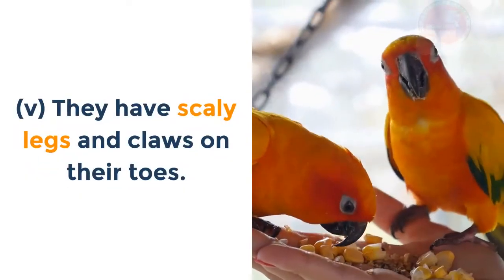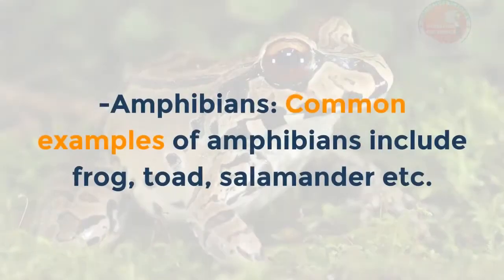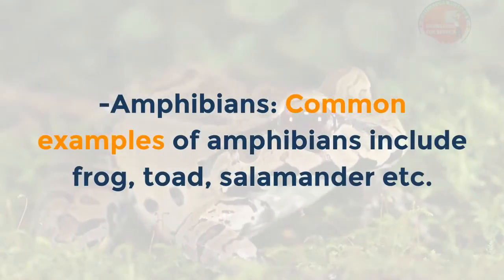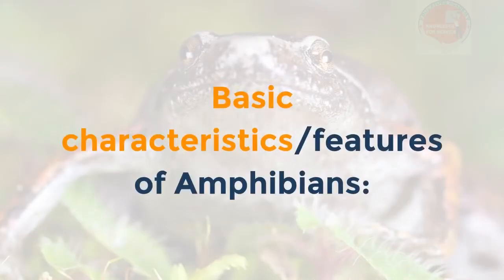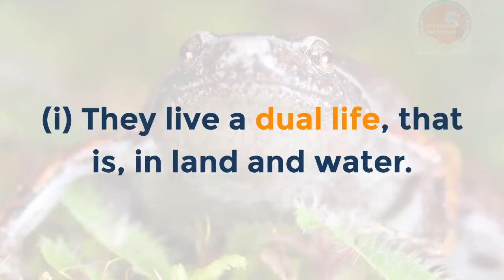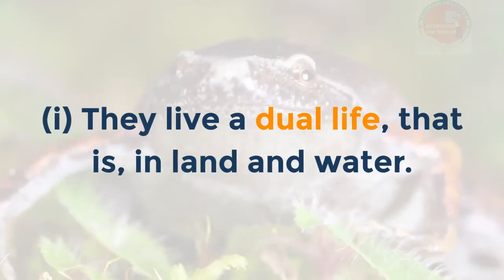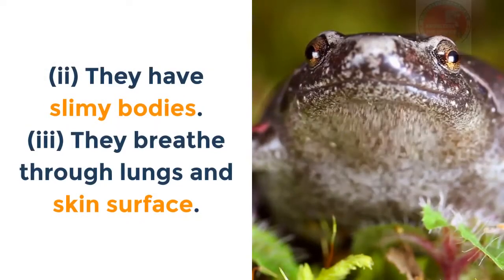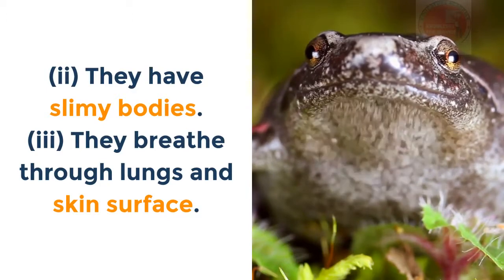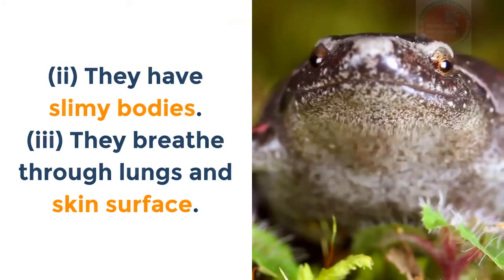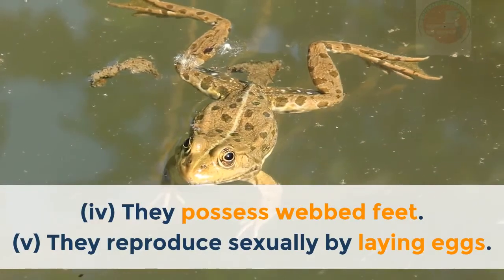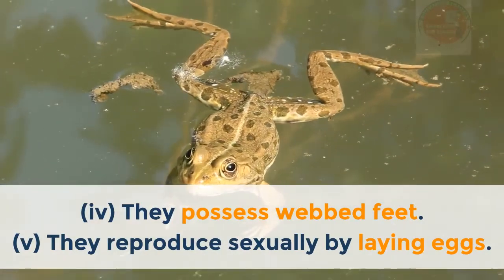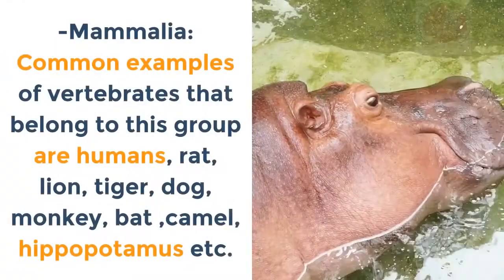Class Amphibia: common examples include frog, toad, salamander, etc. Basic characteristics: i. They live a dual life — on land and in water. ii. They have slimy bodies. iii. They breathe through lungs and skin surface. iv. They possess webbed feet. v. They reproduce sexually by laying eggs.